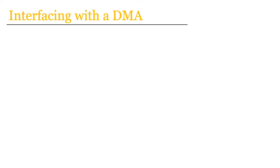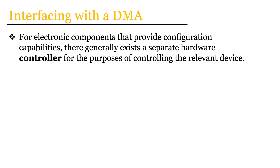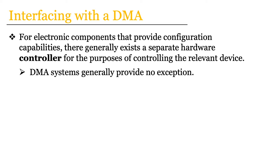Returning to the idea of wanting a generic configurable interface for a DMA system, it turns out that in general having this for data transfer means we have to have quite a few things configured and specified before we can perform data transfer between any two arbitrary sets of memories. In electronics, when we have an interface that centralizes these configurations and control, we generally implement separate hardware known as a controller for the purposes of controlling that relevant device. It turns out that DMA is generally no exception to this observation.